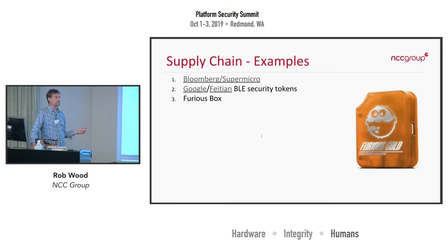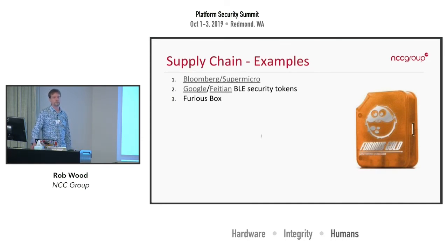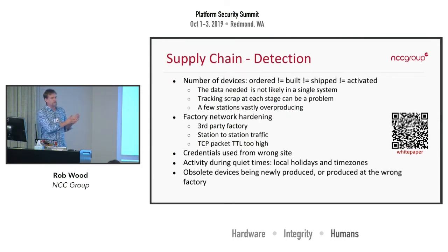The lesson here is that you need to build your products in a way that if something like this happens, it's not a problem. You can't treat your factory tools as a secret because you're giving them out to your factory, and their job is to cut as many corners as possible. I'm not going to go through all of the ways you can detect this — I wrote a white paper back in 2015 that discusses it, and there's a QR code link to it.